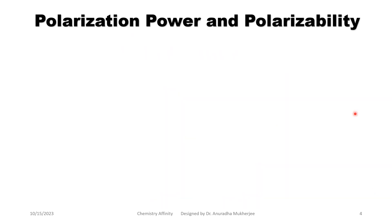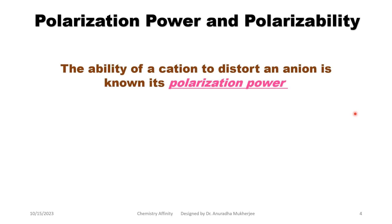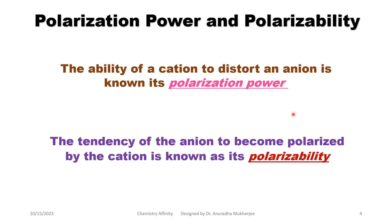Polarization depends on two factors: polarizing power and polarizability. Polarizing power is the ability of a cation to distort an anion. Polarizability is the tendency of the anion to become polarized by the cation. More polarizability means the anion orbital gets overlap with the cation orbital.